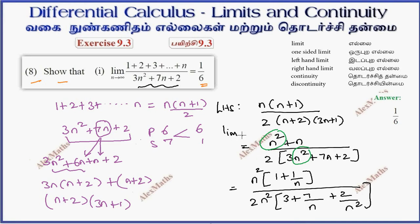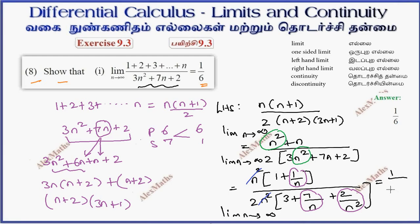Now, limit n tending to infinity. Substituting infinity, 1 by n and 1 by n² values become 0, since anything divided by infinity is 0. So the total answer is 1 by 2 into 3, which equals 1 by 6.